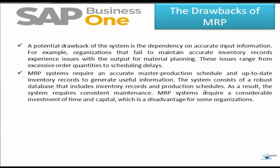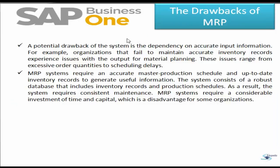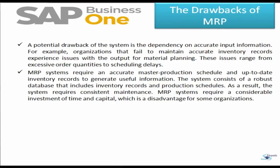There are some drawbacks of MRP as well. A potential drawback is dependency on accurate information — if you do not feed accurate information into an MRP system, it may result in deviation in production orders and resources required, ultimately causing a loss for the company. MRP systems require an accurate master production schedule and up-to-date inventory records to generate useful information. The system consists of a robust database including inventory records and production schedules, requiring consistent maintenance. MRP systems also require a considerable investment of time and capital.